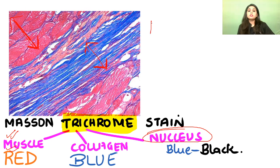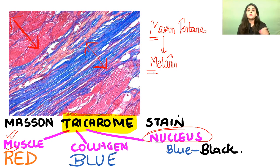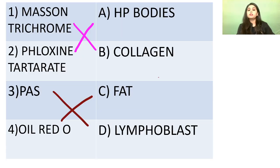Masson-Fontana is M for melanin. Read the question carefully: Masson-Fontana is for melanin; Masson trichrome has three colours and corresponds to collagen in the options. Remember: muscle red, collagen blue.